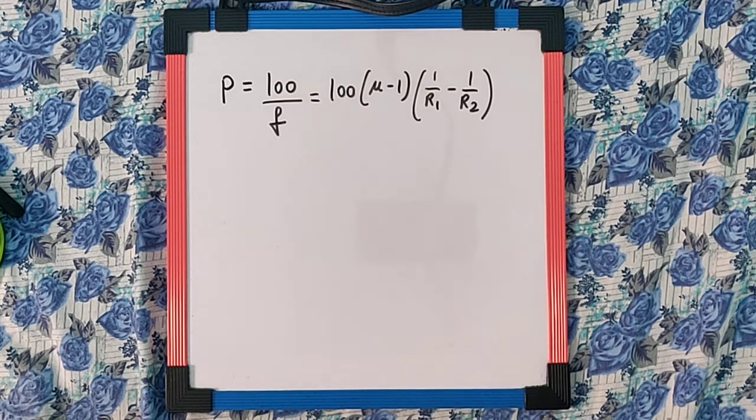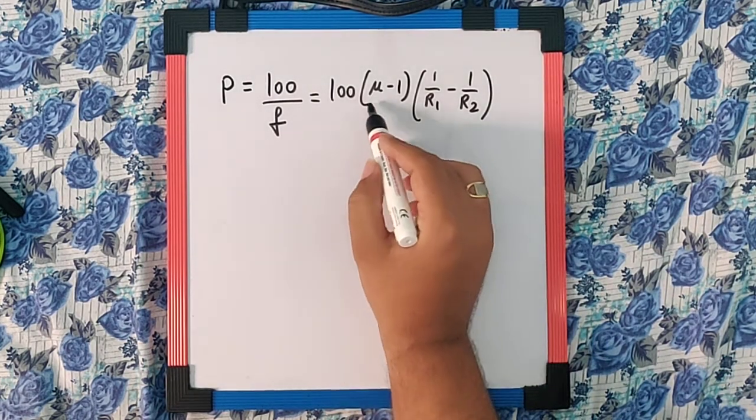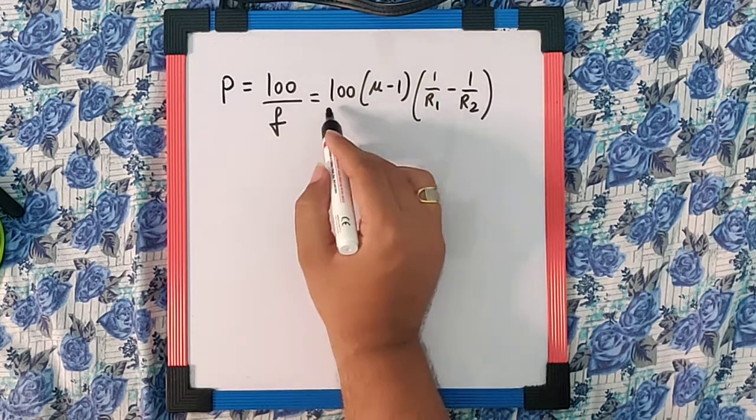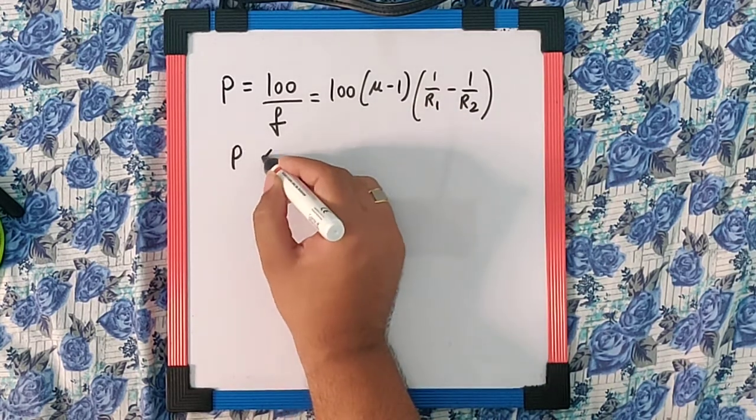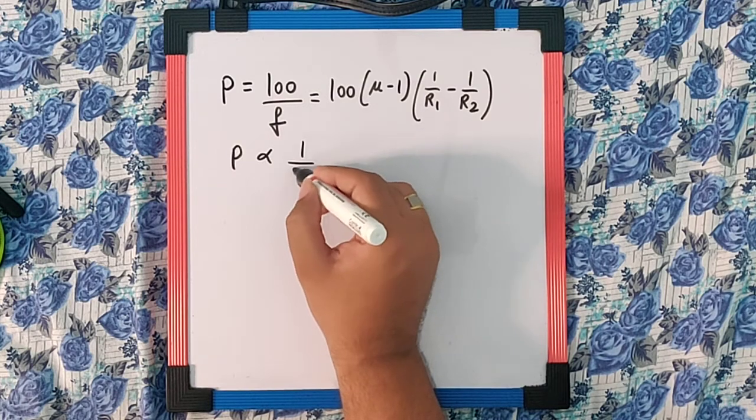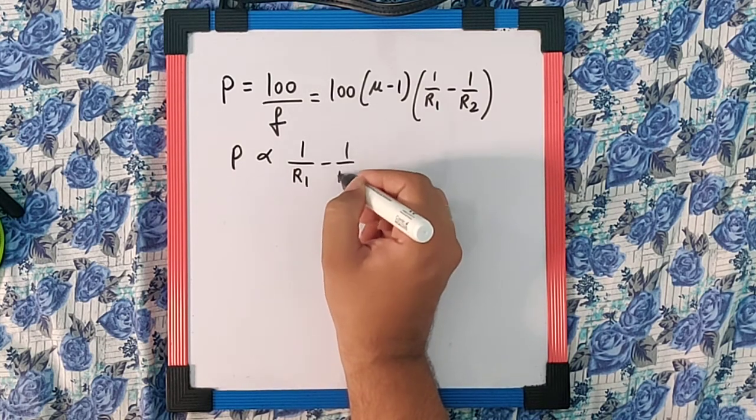Now here nothing is mentioned about the value of mu, so I can assume that to be a constant and 100 is definitely a constant. So I can say power is directly proportional to 1 by R1 minus 1 by R2.